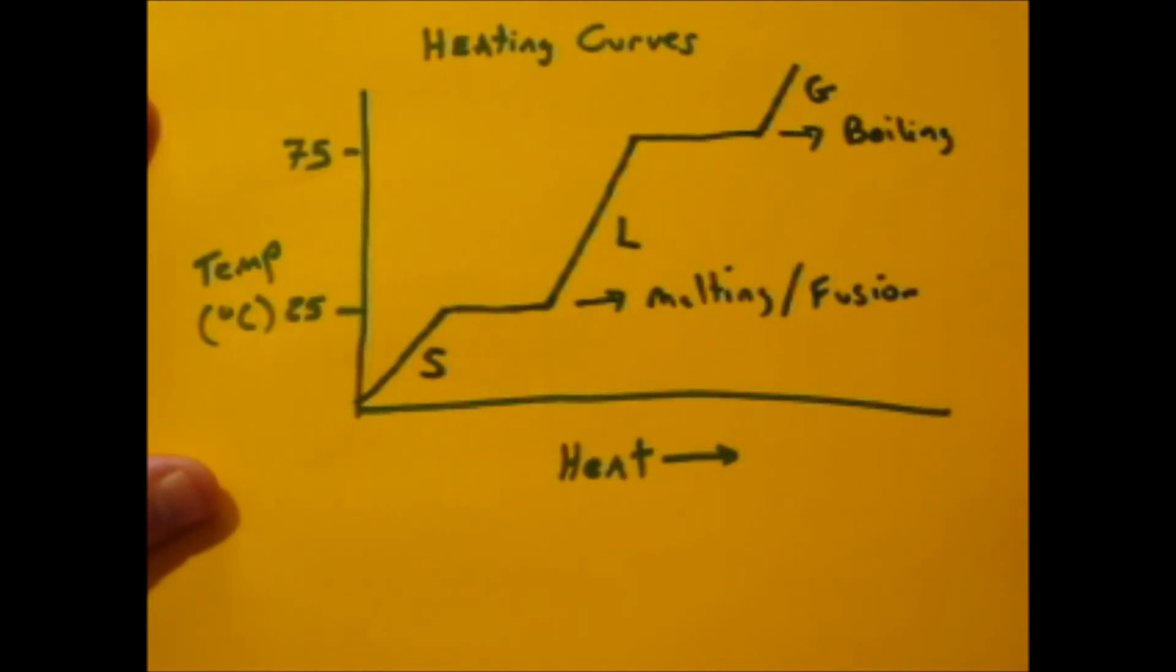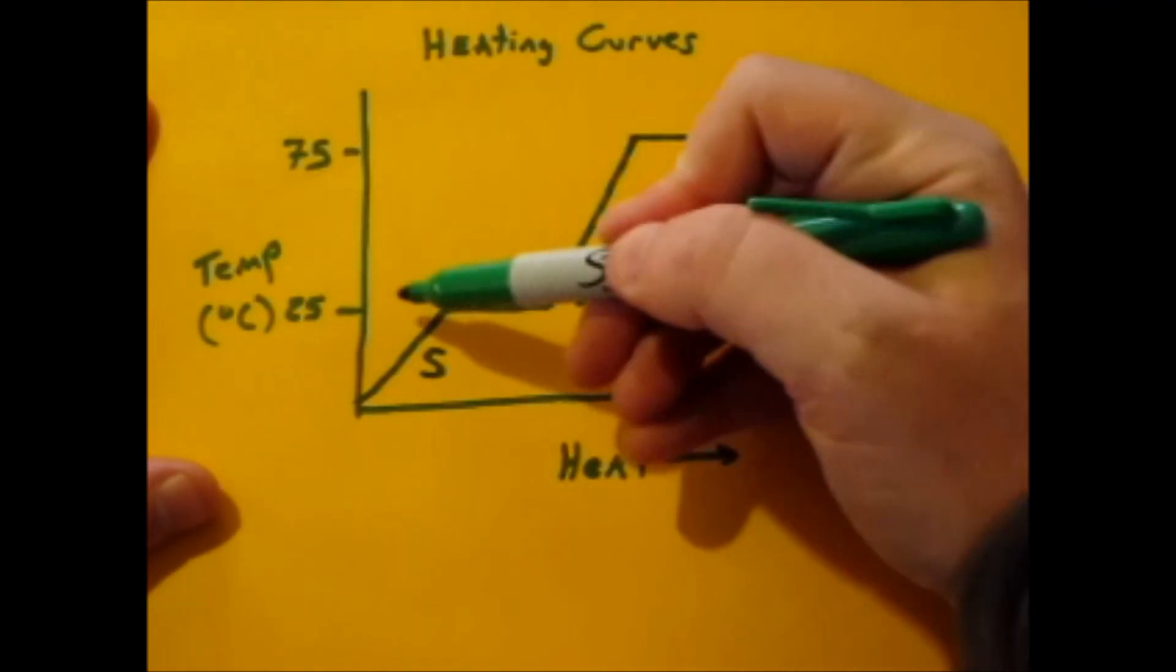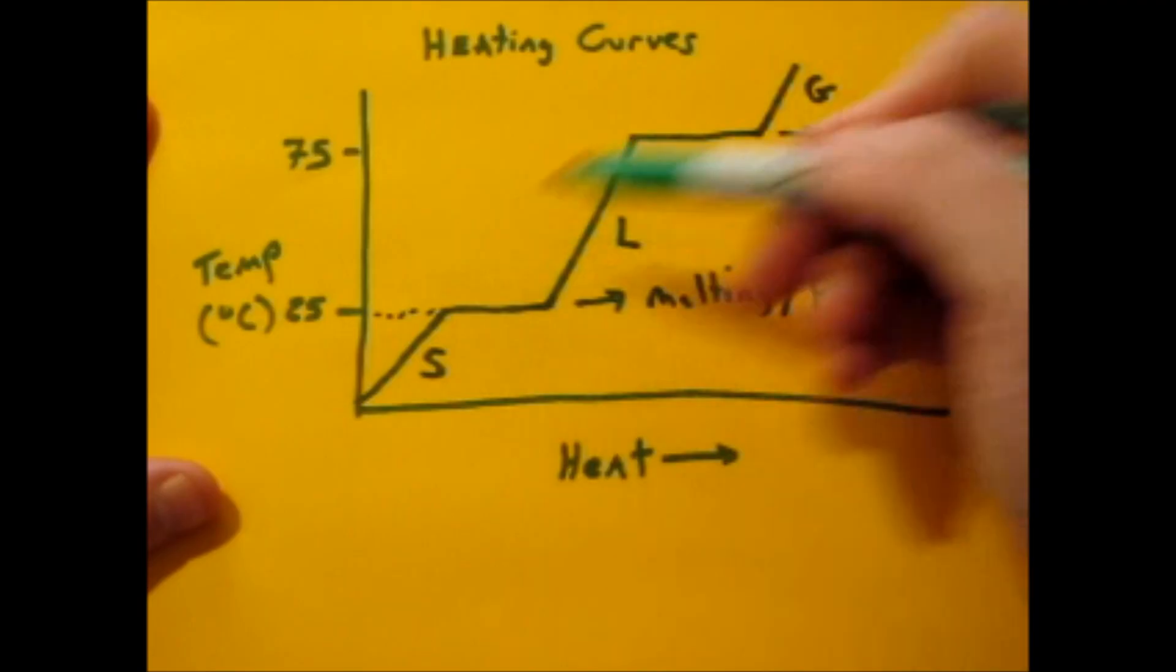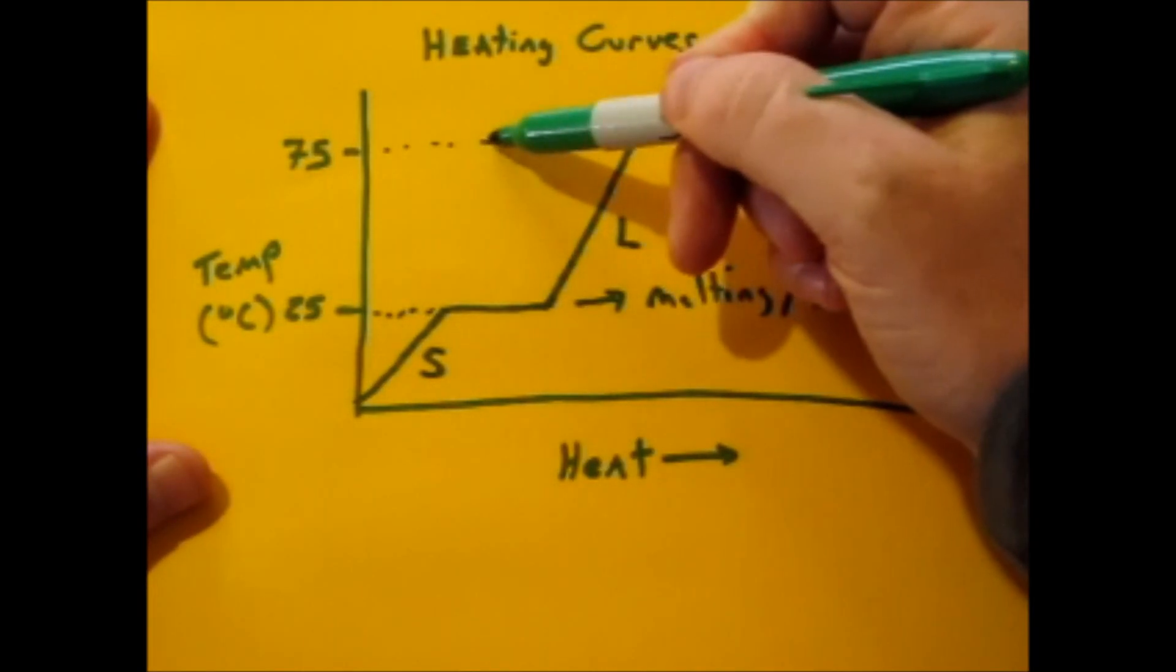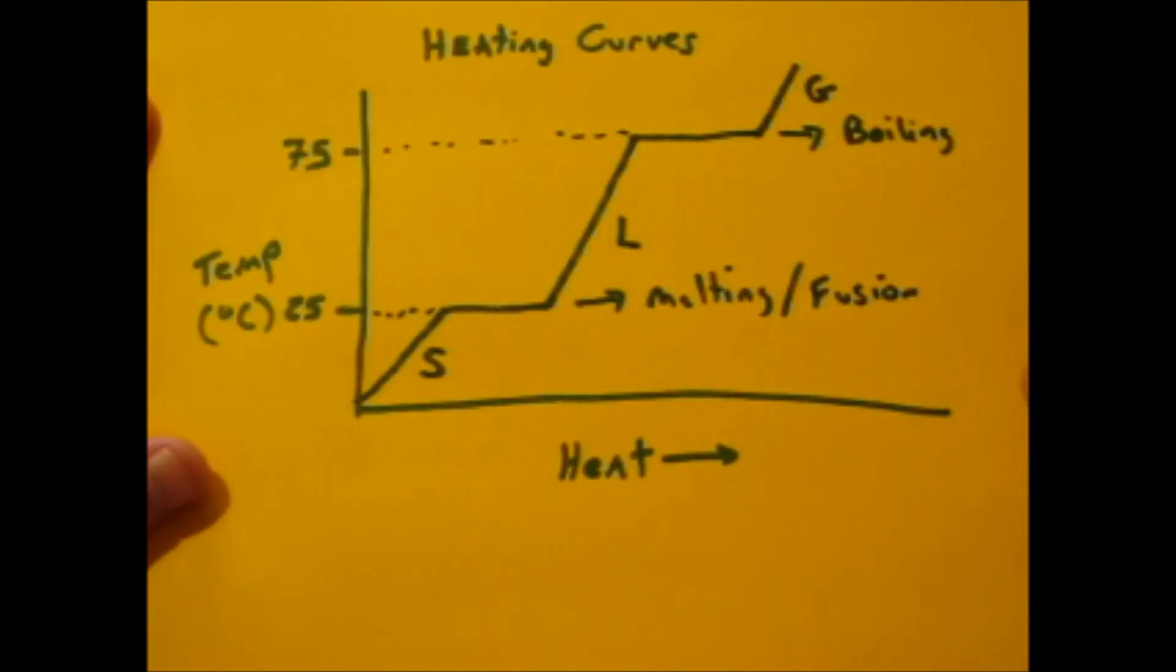If you want to know the temperature of the melting point, well just look where the plateau is, and you follow the line across, and you'll see it's 25 degrees Celsius. If you want to know the boiling point for this substance, you follow the upper plateau over, and you'll find out that it matches up to 75 degrees Celsius.